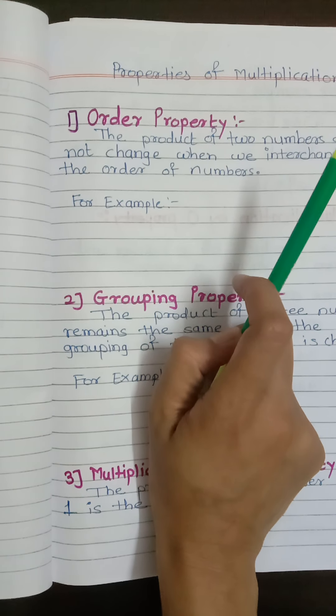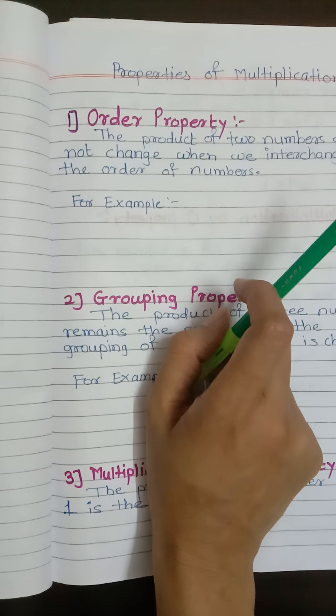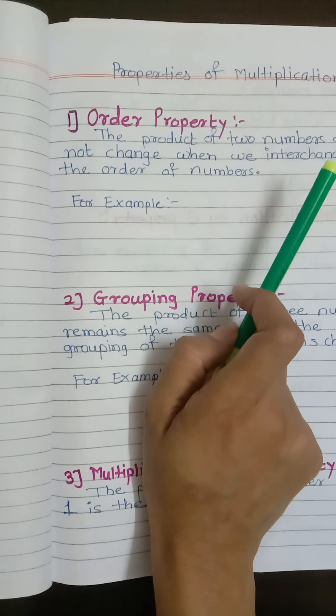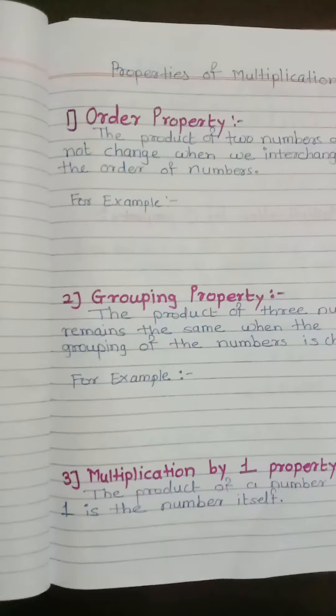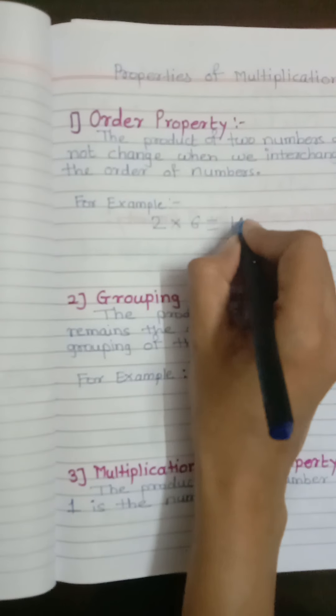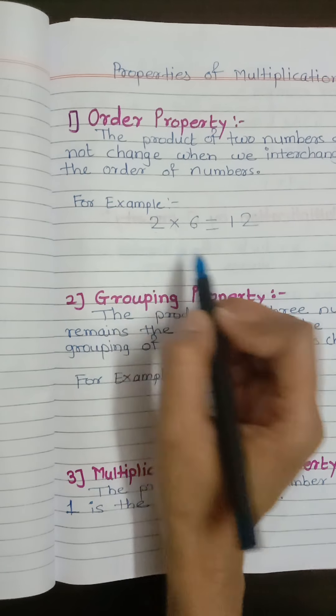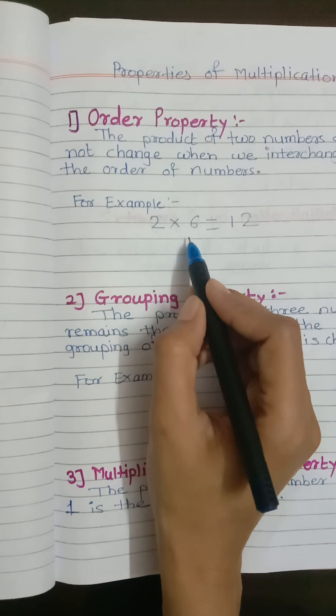The first property of multiplication is called the order property. The product of two numbers does not change when we interchange the order of numbers. Our product will not change if we reverse the order of numbers. For example, 2 multiplied by 6 is equal to 12.